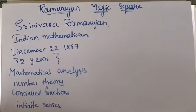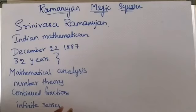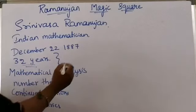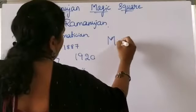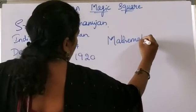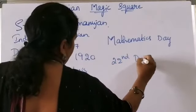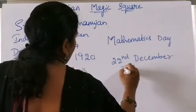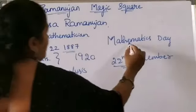Ramanujan was born to poor parents on December 22nd, 1887 in Tamil Nadu. He lived for just 32 years. He did not have good health since his childhood. At the last stage of his life, he was found to have tuberculosis and diseases due to vitamin deficiency. Due to all this, he died at the age of 32 in 1920. Mathematics Day is celebrated every year on 22nd December — the date of his birth.